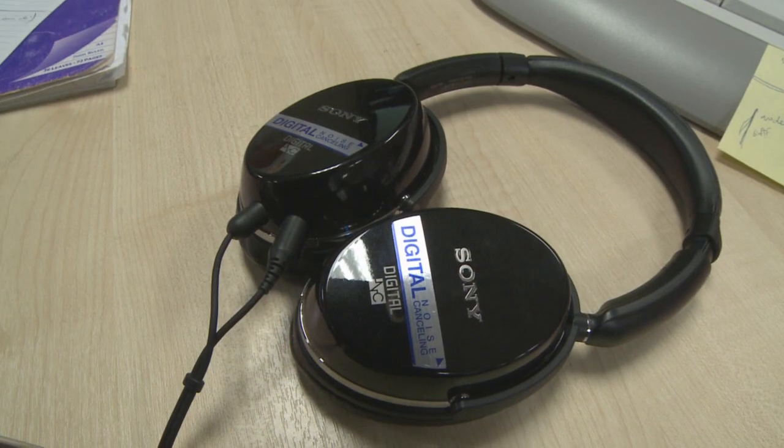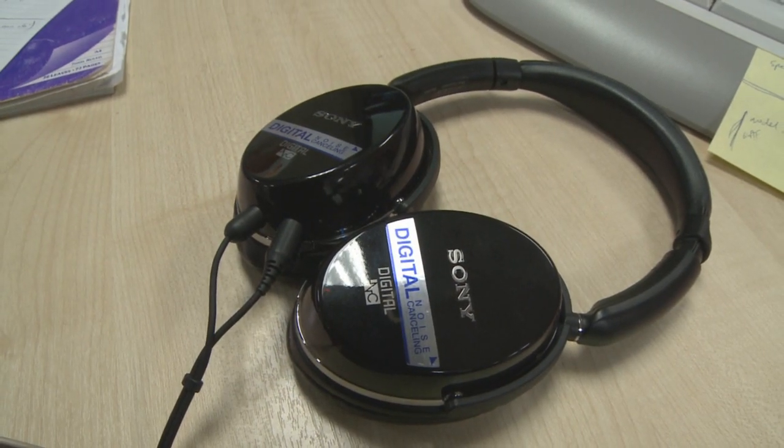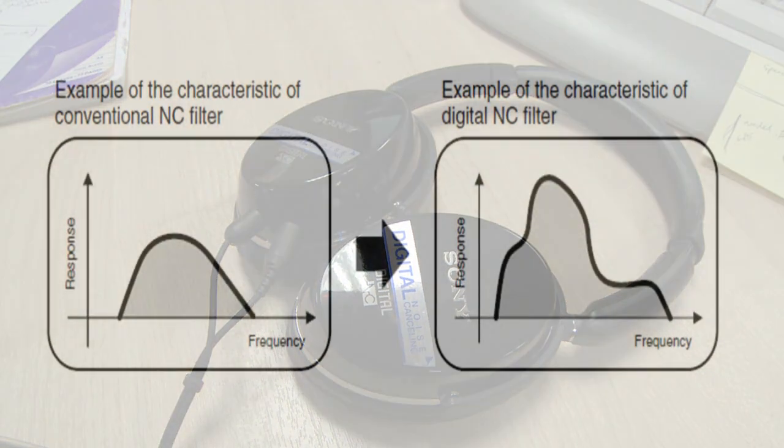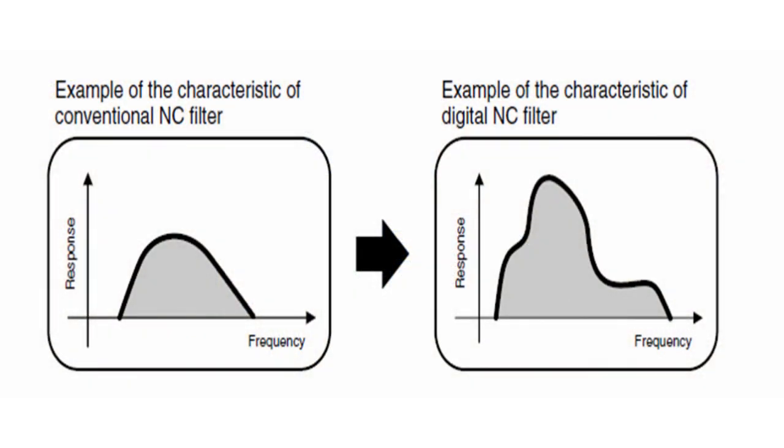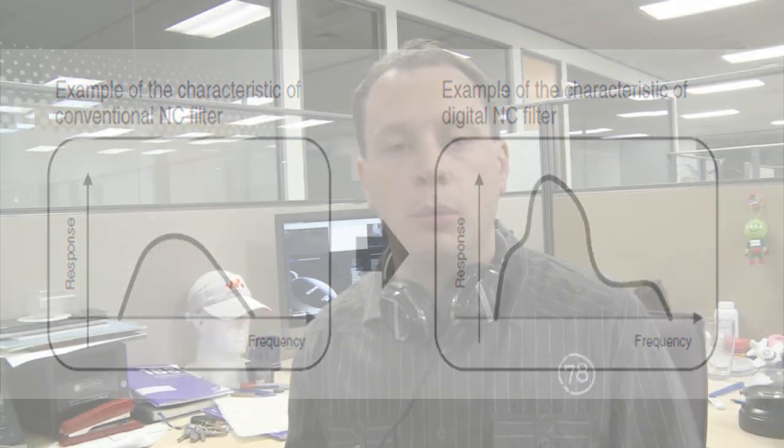So, Sony have developed a new technology called digital noise cancelling. It's completely different from ordinary analogue noise cancellation in that it actually adapts to the type of sound in the background. Which means that it works well with higher frequencies, lower frequencies and everything in between. Whether you're travelling on a train, on a bus, on an aeroplane, working in an office environment, mowing the lawns, it doesn't matter.